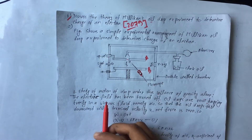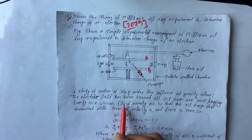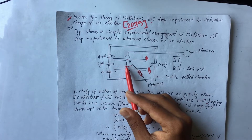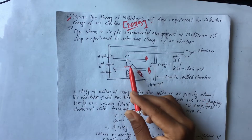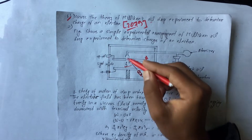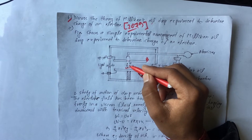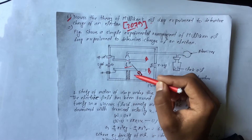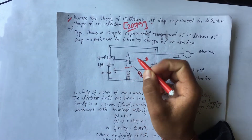The electric field has been turned off. The oil drops are now falling through a viscous fluid, namely air. The oil drop falls downward and reaches terminal velocity, which is V1.